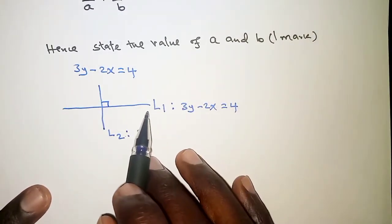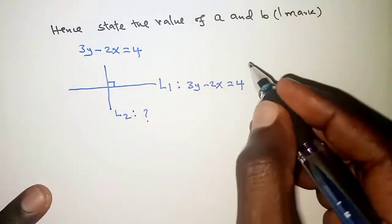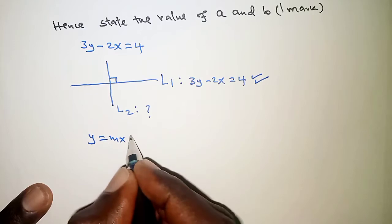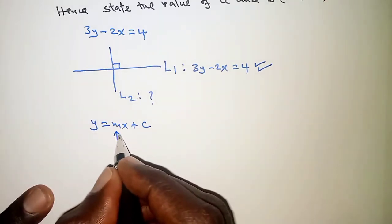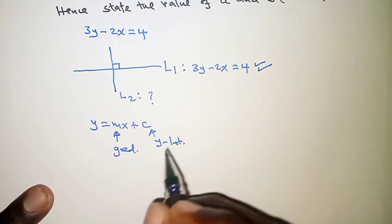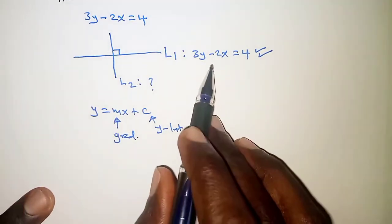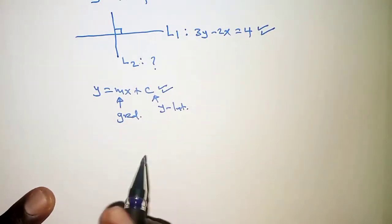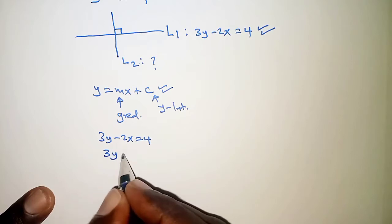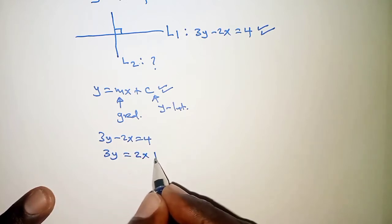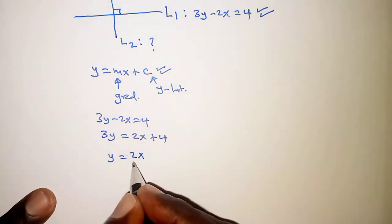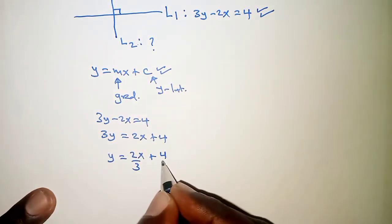From the fact that the two lines are perpendicular to each other, we will be required to get the gradient of Line 1, and that means we'll have to express its equation in the form y equals mx plus c, where m represents the gradient and c represents the y-intercept. So let's express 3y minus 2x equals 4 in this form: we get 3y equals 2x plus 4, and dividing all through by 3 gives y equals 2x over 3 plus 4 over 3.